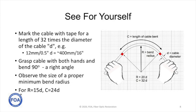Here's a quick test you can do for yourself to see how big the bend radius is of a cable you're working with. Measure the diameter of the cable and mark the cable with tape for a length 32 times the diameter. For example, a 12 millimeter or half-inch cable would be marked at a 400 millimeter or 16 inch length. Grasp the cable with both hands past the marks and bend it 90 degrees — a right angle. You can gauge 90 degrees using blocks on sidewalks or doorways, and observe the size of the bend radius. If you have a cable with a 15 times bend radius, the length you mark on the cable should be 24 times the diameter.